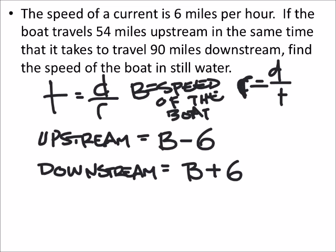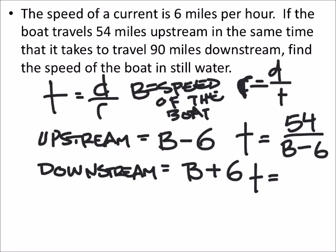To set this up, the time upstream would be the distance upstream, which was 54 miles, divided by the rate upstream, which was the speed of the boat minus 6. The time downstream is 90 divided by the speed of the boat, but now it's plus 6.